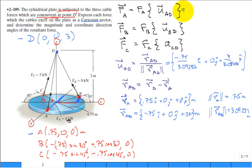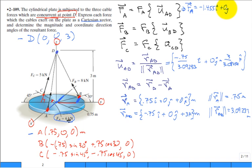Now we compute force vector FA. Taking the magnitude of 6 kilonewtons times the unit vector: 6 times (negative 0.75 / 3.09233) gives negative 1.455 in the i-direction; zero in the j-direction; and 6 times (3 / 3.09233) gives approximately 5.82 in the k-direction. All units are kilonewtons. The same process is then applied for FB and FC.